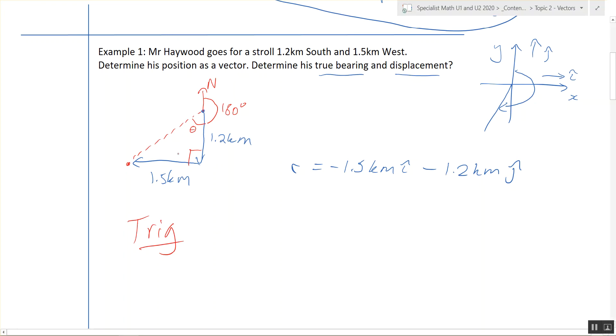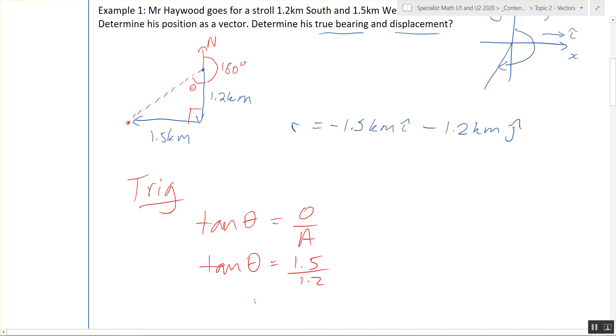We've got the opposite. Sorry, this is the opposite of the angle. This is the adjacent of the angle. So we use tan theta. Tan theta. What's the opposite? 1.5. 1.5 over 1.2. So that's the angle in that triangle.